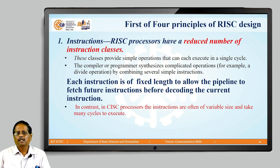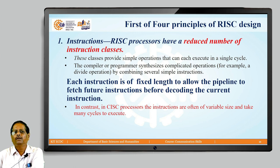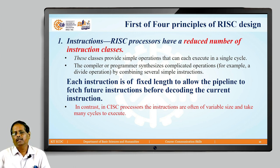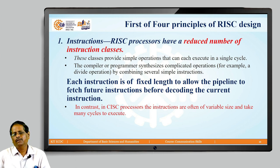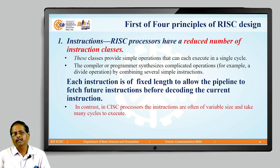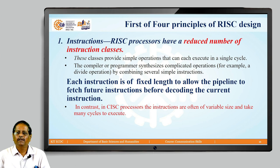RISC processors have a reduced number of instruction classes — for example, branch, arithmetic logic operations, and software interrupt. In total, no more than 58 instructions exist in the ARM7TDMI-S. In contrast, CISC has a huge number of instructions available for many small operations.